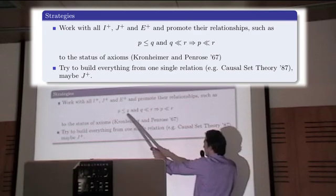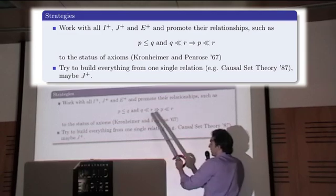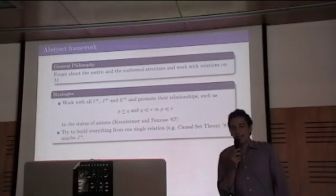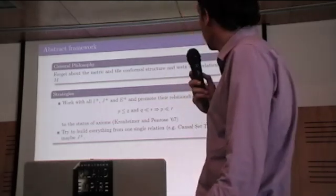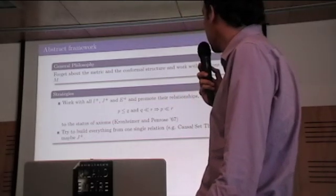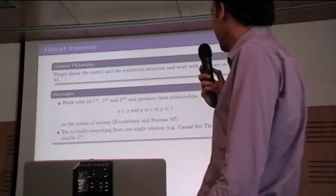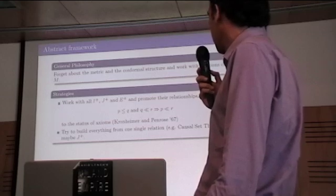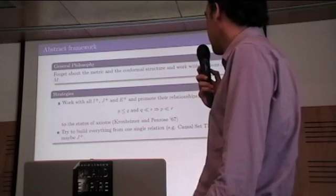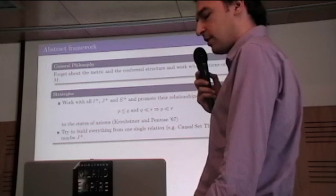It means if I connect P to Q with the causal curve and Q to R with the time-like curve, then there is a time-like curve from P to R. So this would be a constraint between all those three relations, and we could promote them to axioms. Or we can just consider the space-time in an abstract way as a manifold with only one type of relation. For instance, in causal set theory, one uses the causal relation.